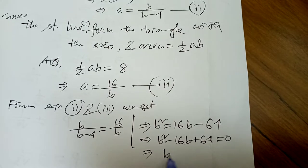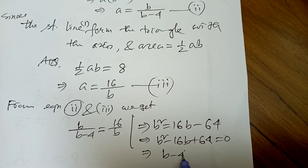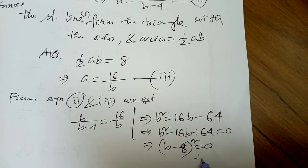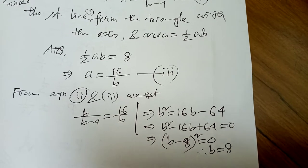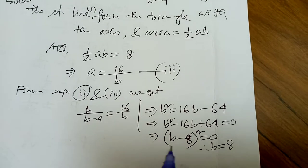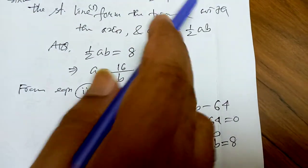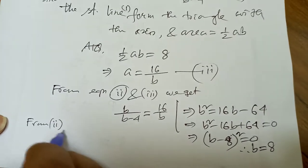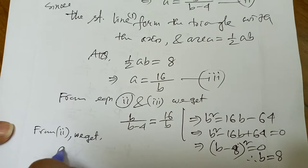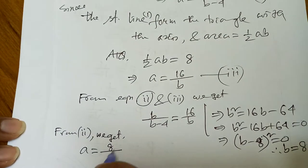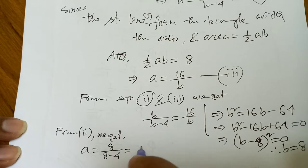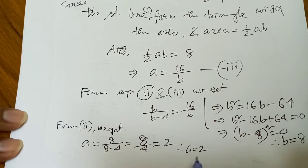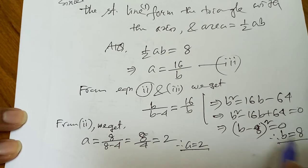After solving, b = 8. From equation 2: a = b/(b − 4) = 8/(8 − 4) = 8/4 = 2. So finally we have a = 2 and b = 8. Substituting back into the original equation 1: x/2 + y/8 = 1.